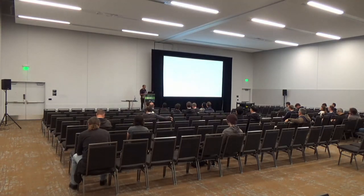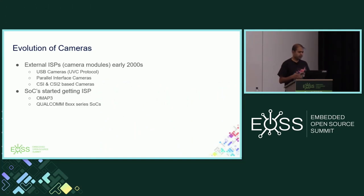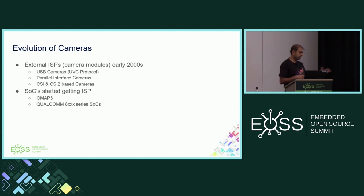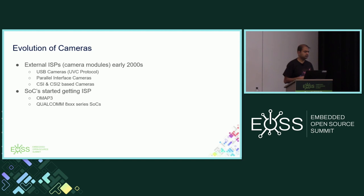Let's first look at the evolution of cameras to understand why the transition from V4L2 to V4L2 Media Controller happened. In the early or mid-2000s, cameras were mostly built using external ISPs — ISP stands for Image Signal Processor. External ISPs were either based on USB cameras using UVC protocols, or external modules with parallel camera interfaces, or CSI and CSI2-based camera interfaces.